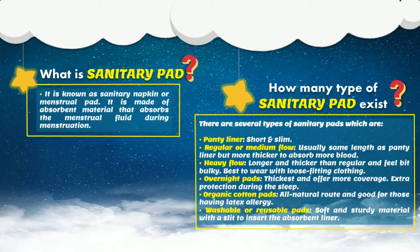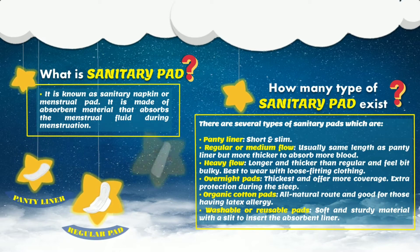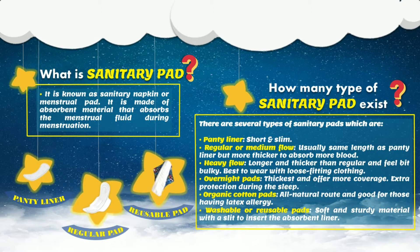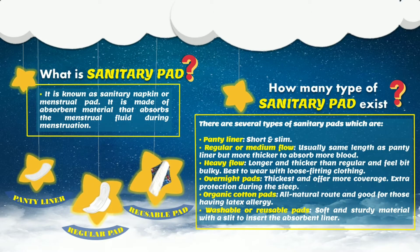Lastly, washable or reusable pads. They have soft and sturdy material with a slit to insert the absorbent liner. You can see in the video how the sanitary pads look like — the panty liner, regular pad, as well as reusable pad.